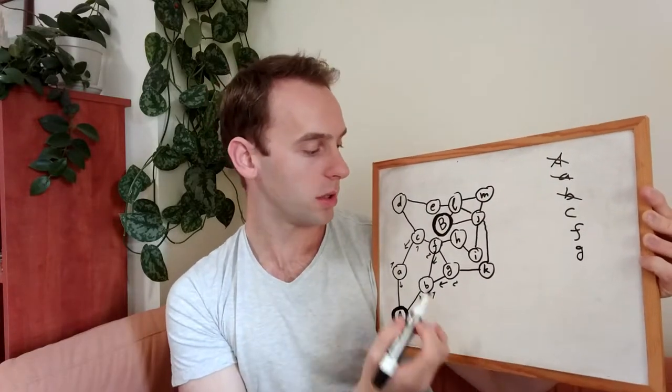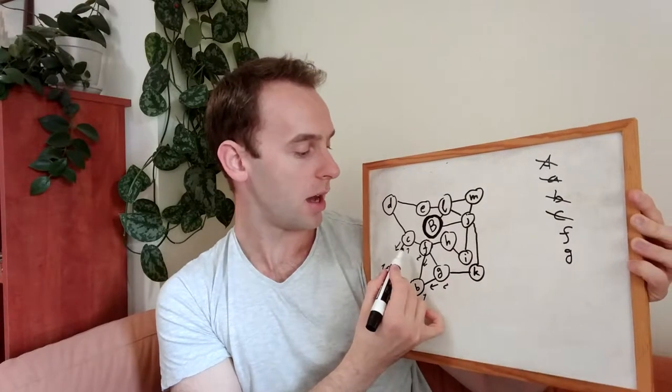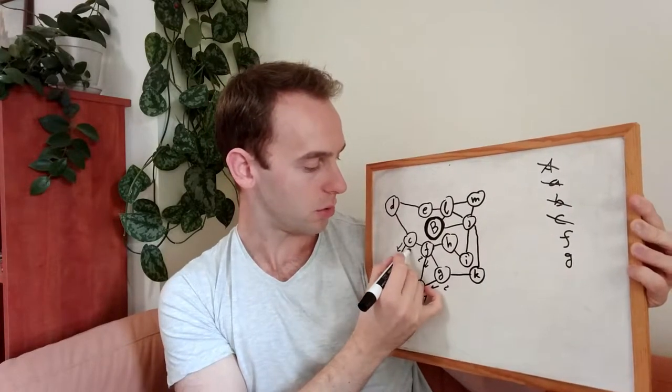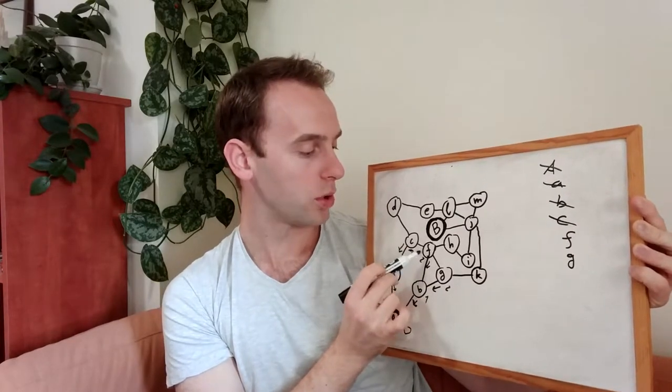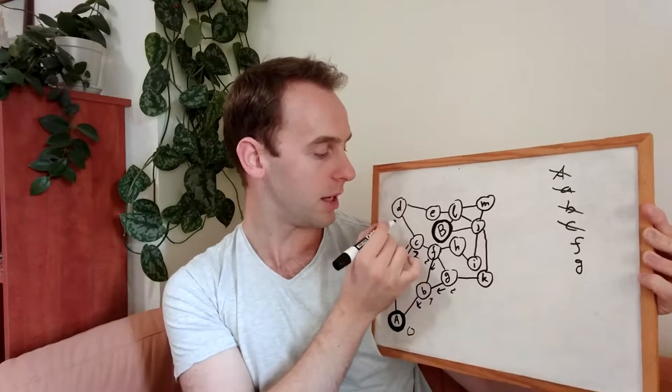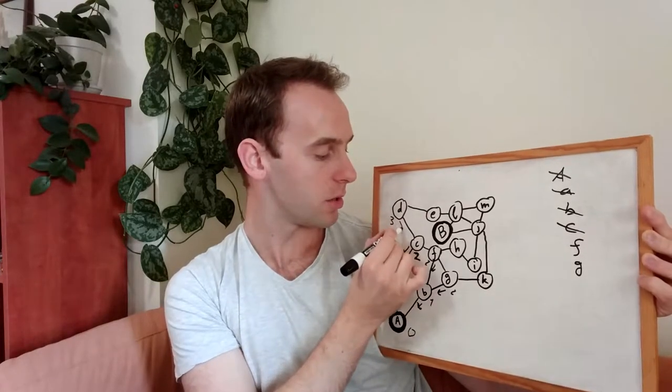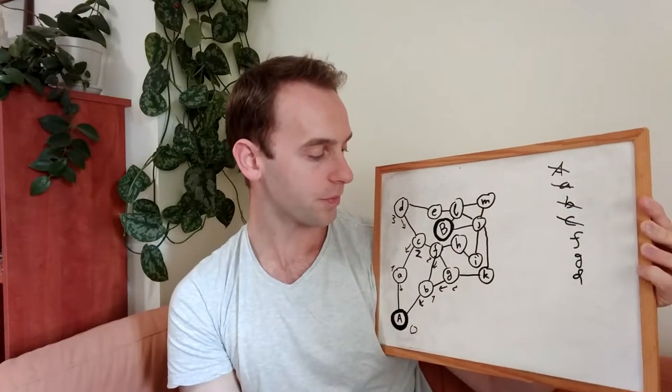The next node that we will go to is C. And now we will update the neighbors of C. It should be two. We will update the neighbors of C. And we won't update the node F because we already visited it. So we will update D being three, that we arrived from here. And we will put the node D here.